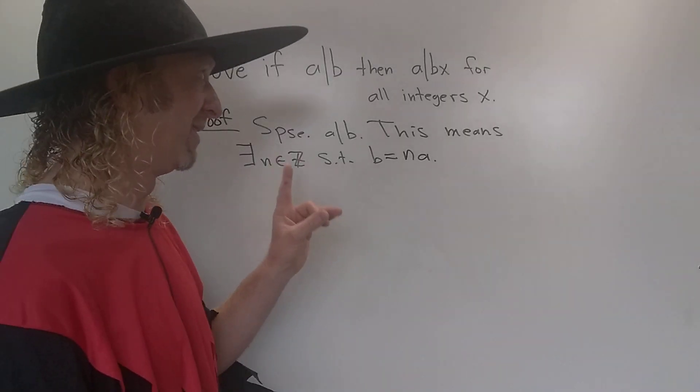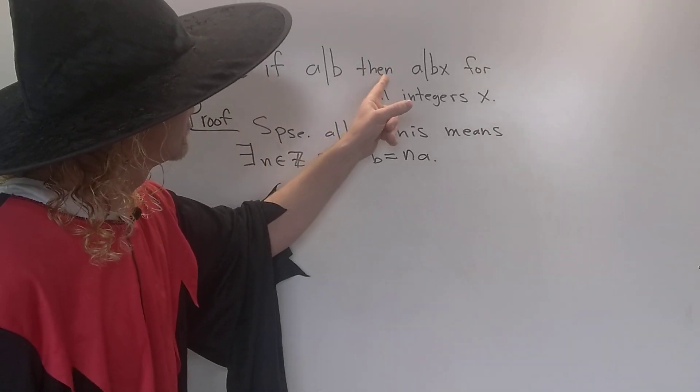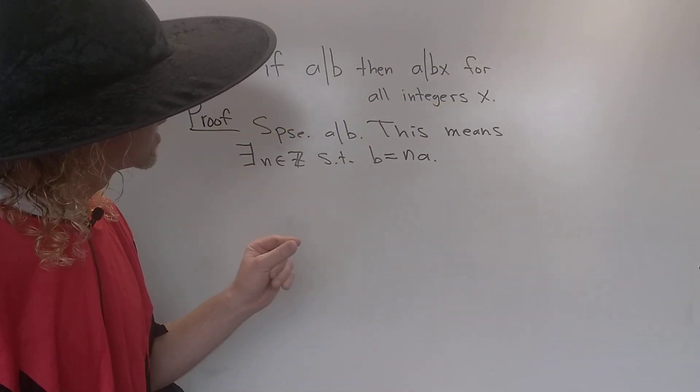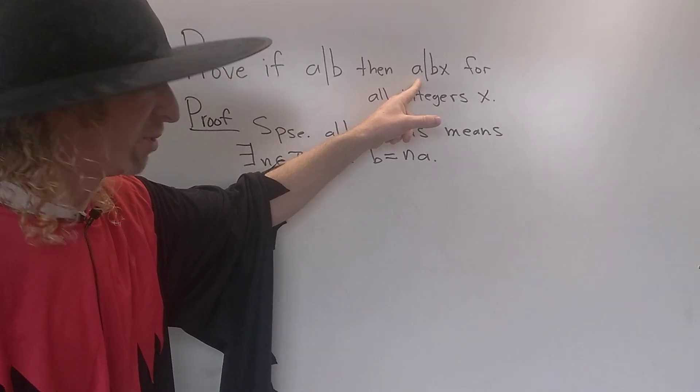So what do we have to show? Let's see. We have to show that a divides bx, right? So what does that mean? That means that bx is a multiple of a.